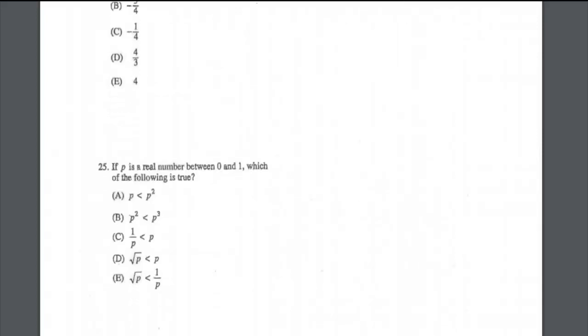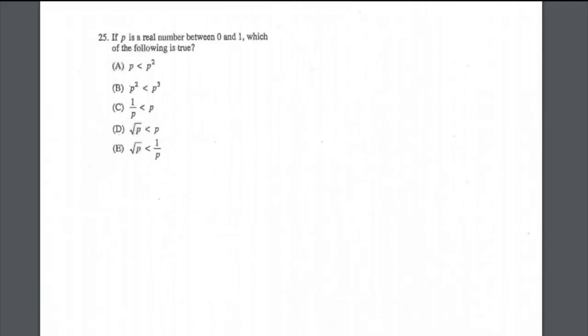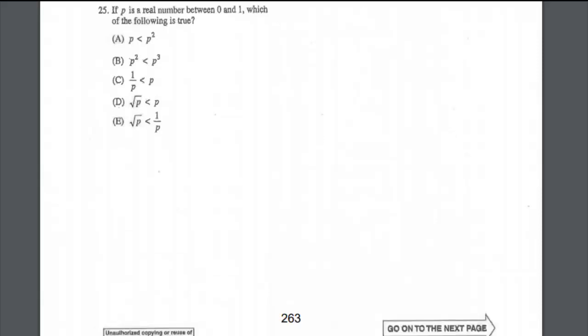Moving to question number 25: if p is a real number between 0 and 1, it's like a fraction. Which of the following is true? Taking an example, options A, B, C, and D are all wrong. But for number E: the square root of 1/4 is 1/2, and 1 over 1/2 equals 2, which is greater than the original value. So the suitable answer is number E.